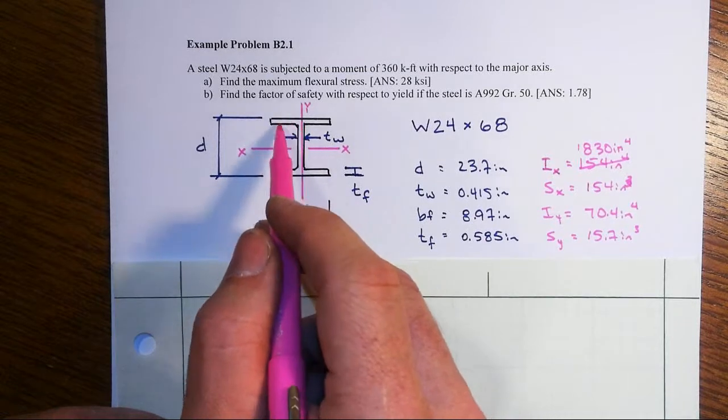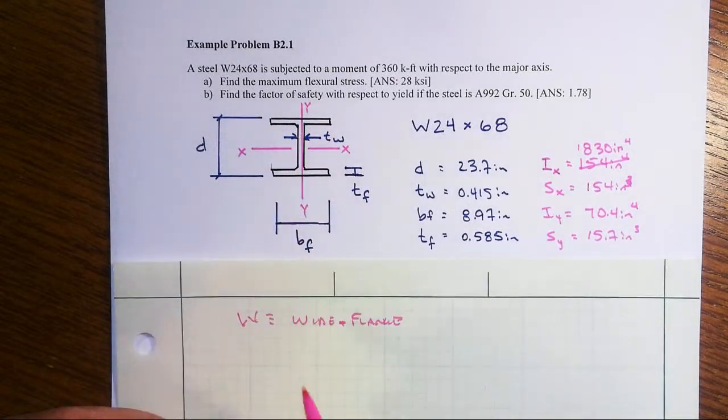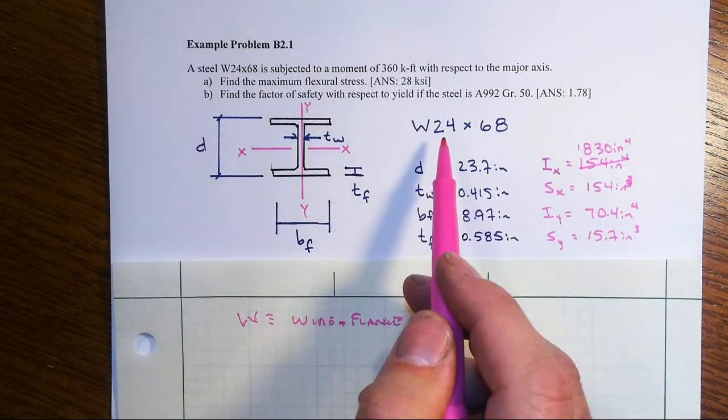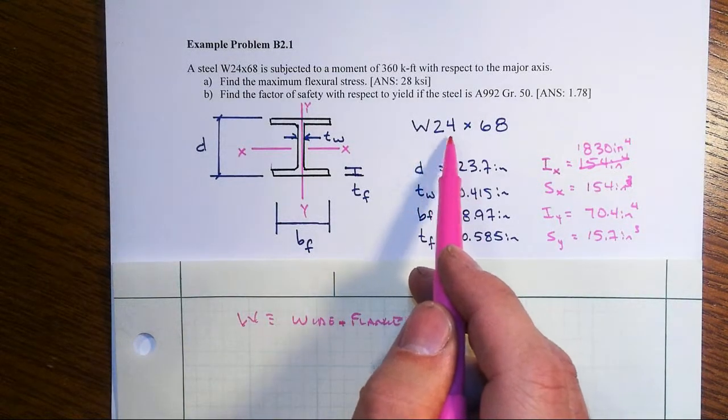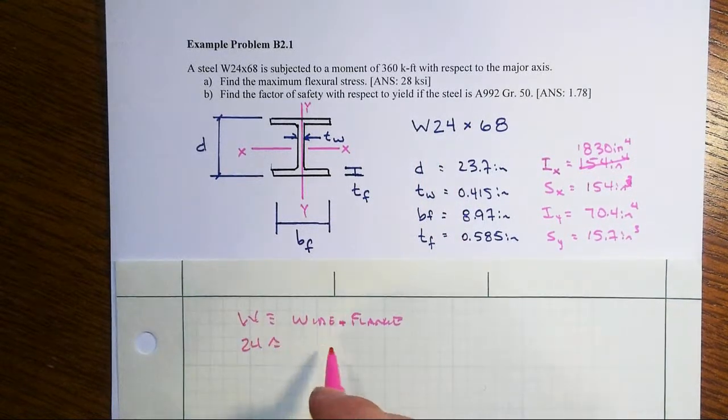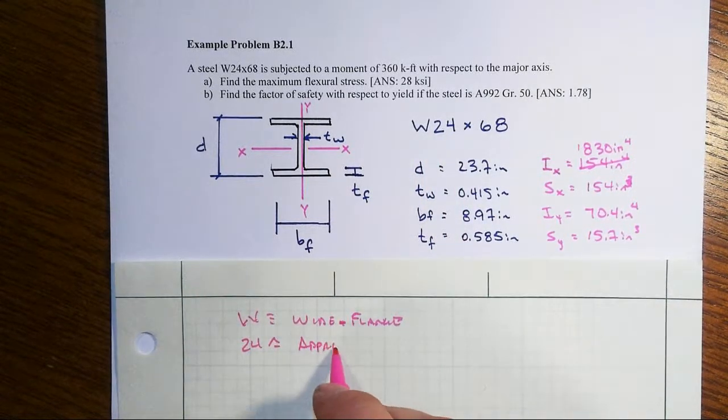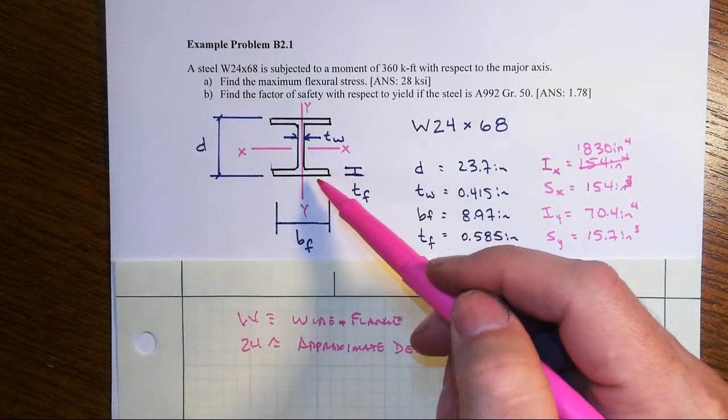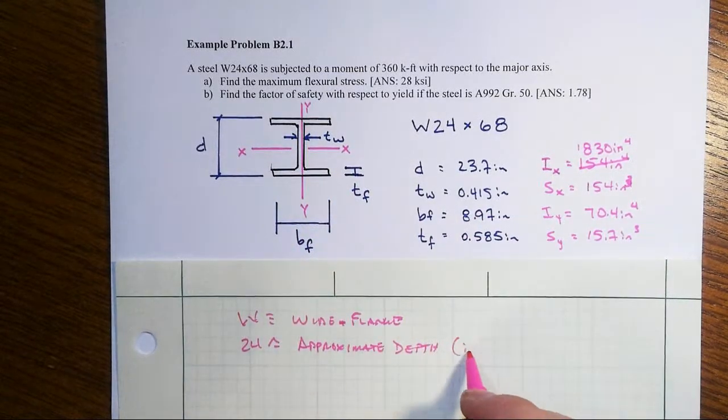These outer fins are called the flanges. The pieces connecting those two are called the web. Now, the designation in the U.S. imperial units are that this next number, the 24, is the approximate depth. You might call it height, but we call it in the steel world the depth of the cross-section, D, in inches.